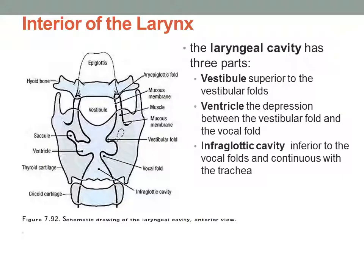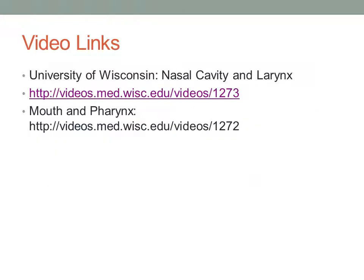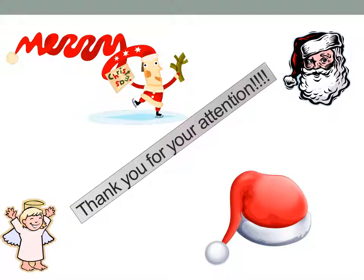And then last but not least, if you turn towards the interior of the larynx, you should be able to see and identify the three parts: the vestibule, which is superior to the vestibular folds; then the ventricle, which is a little depression between the vestibular fold and the vocal fold; and then down here the infraglottic cavity, which is inferior to the vocal folds and is also continuous with the trachea. Here are a couple of links to videos that might be helpful for today's dissection. Thank you all for your attention.